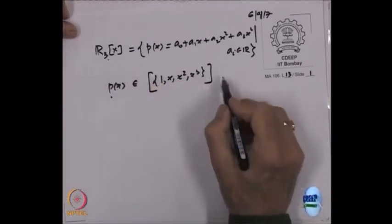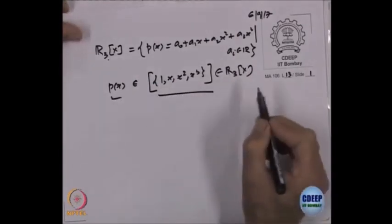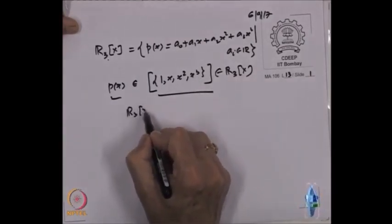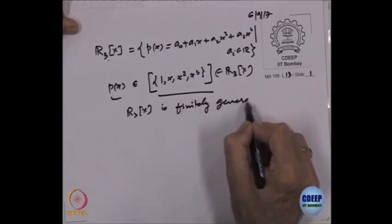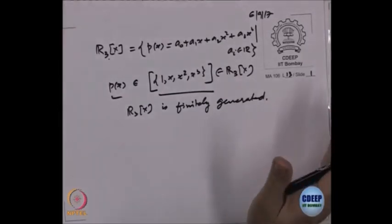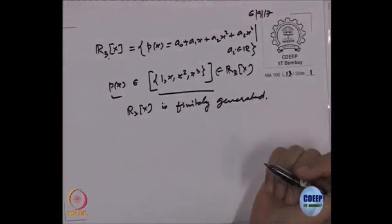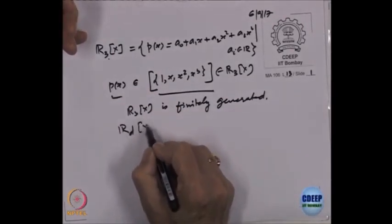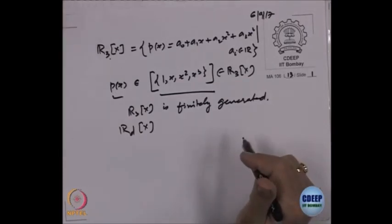So every element of R₃[x] is a linear combination of these 4 elements: {1, x, x², x³}. That means R₃[x] is finitely generated — if I take these 4 elements, every element is a linear combination of them. The same will hold for any Rₐ[x] of any degree d — it is again finitely generated.